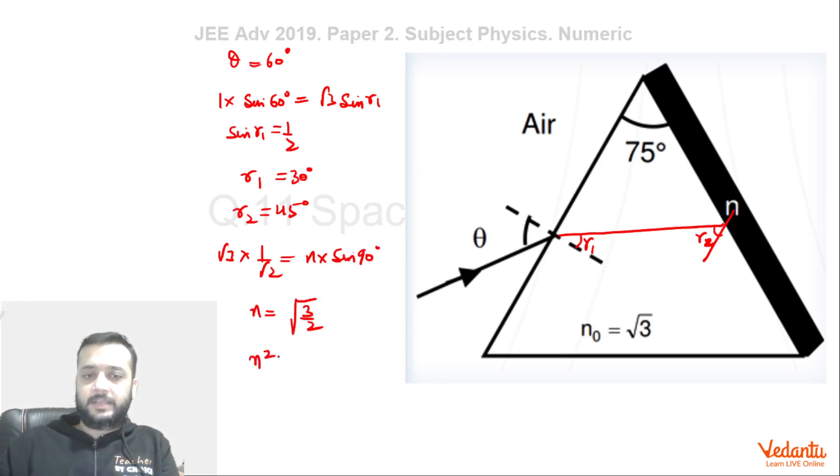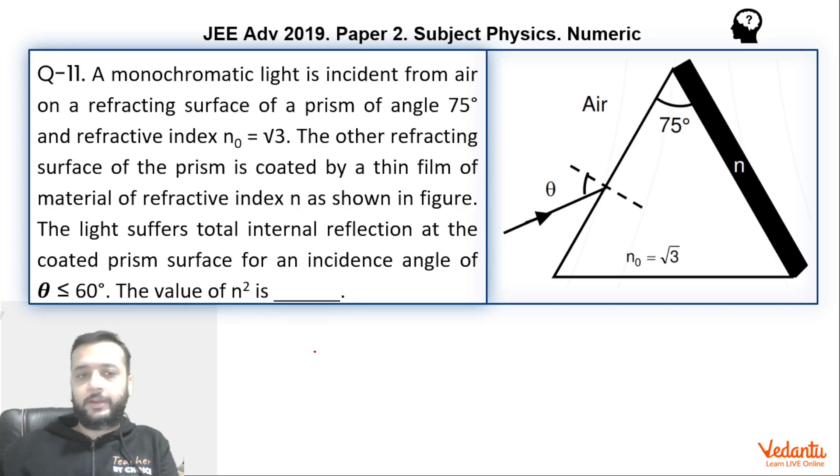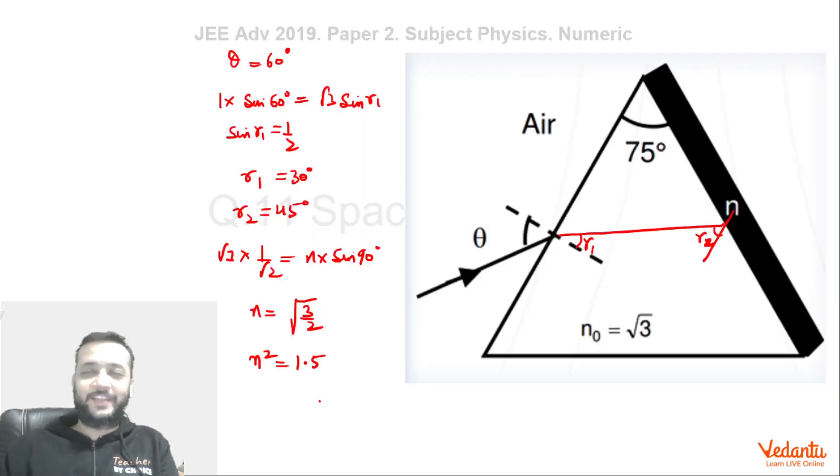So that means N square is 1.5. This is what we were required to find. So you can see this was a very easy question and it would not have taken even a minute for students to solve this. That's it. Thank you.